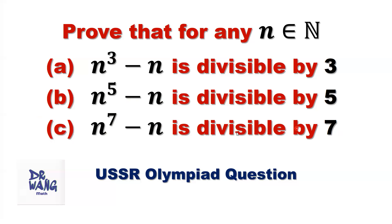It looks like there is a pattern for this kind of question. Here, 3, 5, and 7 are odd numbers. Is that always true? If we change, for example, 7 to 9, that means N to the power of 9 minus N is divisible by 9?